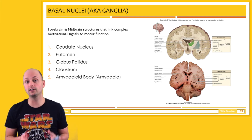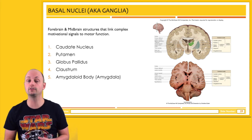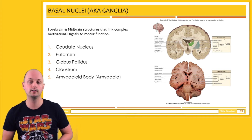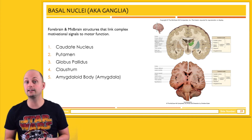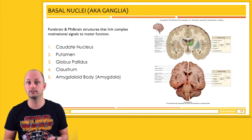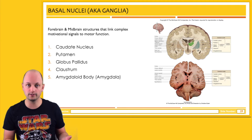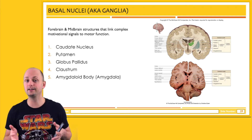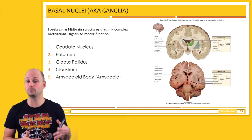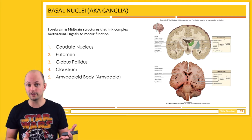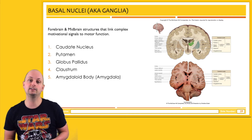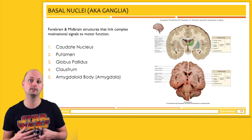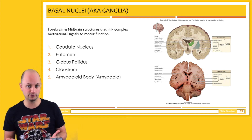Deep to the cortex is a gray matter area known as the basal nuclei, or sometimes as the basal ganglia. This contains a whole bunch of different neurons. Some of them are listed on the slide, but quite honestly, there's a lot of active debate about what's actually part of the basal ganglia and what's not, so I'm only going to cover this region of the brain superficially.